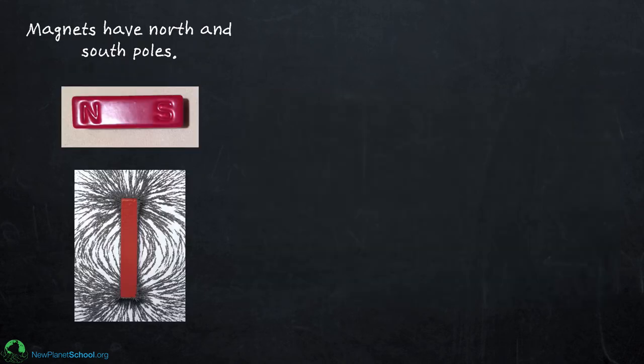Magnets have poles, what are called poles. They have a north pole and they have a south pole. Usually, but not always, magnets are labeled. Here's N for a north pole and here's S for a south pole. That's really important that magnets have poles, as you'll see. It's crucial to the way a DC motor works.